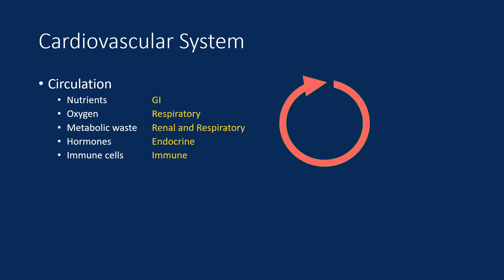What these have in common is that they are all things dealt with by the other organ systems of the body. Nutrients are dealt with primarily by the gastrointestinal tract, oxygen by the lungs, metabolic waste — both nitrogenous waste and CO2 — by the lungs and the kidney, hormones by the endocrine system, and immune cells by the immune system. The cardiovascular system simply connects them together so the body can run as one efficient unit.